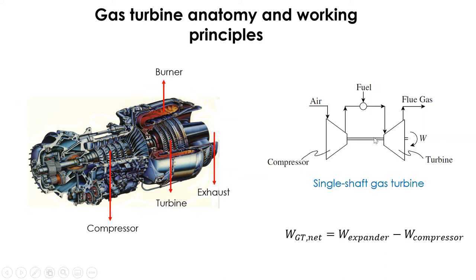Some of the air from the compressor through this stream provides cooling for the combustion walls. The hot, compressed mixture of air and combustion gases then flows to the inlet of the turbine.